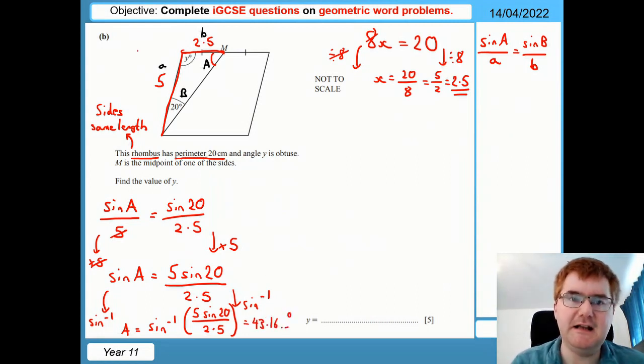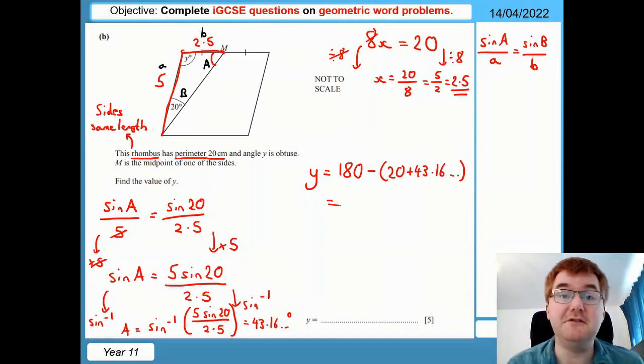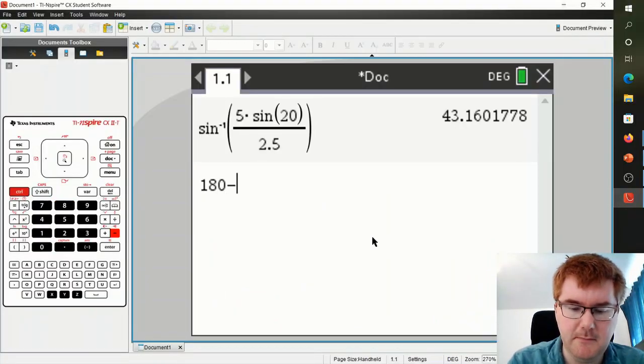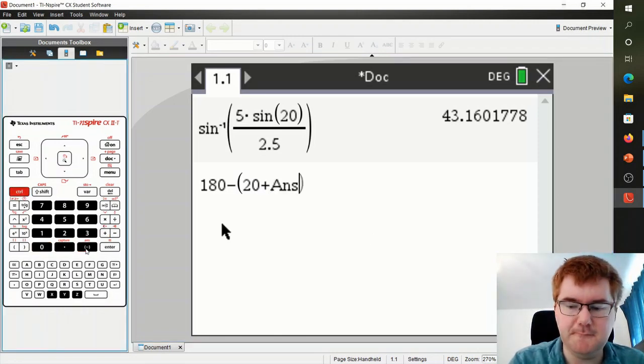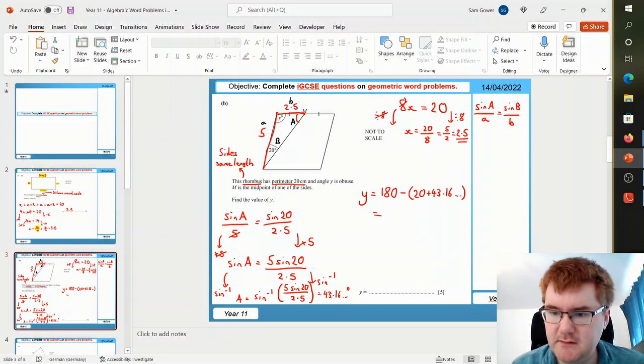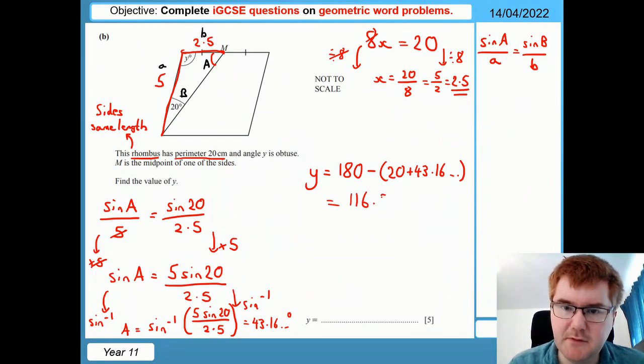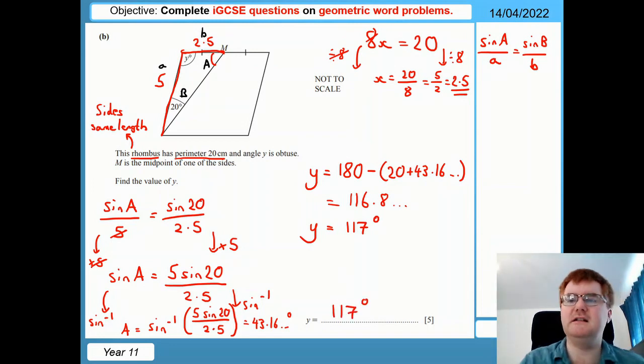Now again, we're going to use that in the next calculation. Because angles in a triangle add up to 180. So to work out Y, remember Y is obtuse here. That's important. So we're going to do 180 minus 2 angles we now know. So 20 plus 43.16. This is where the answer function on your calculator is very useful. So just do 180 minus 20 plus. Now I can use this answer function. Most calculators have this function. Getting to our final answer of 116.8. So 116.8 dot, dot, dot, dot. Now I tend to round to three significant figures for most things. So this would be 117 degrees for all five marks.